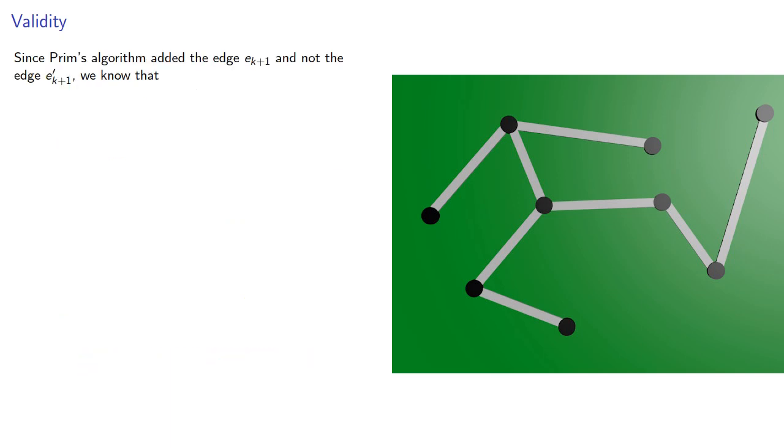Since Prim's algorithm actually did add the edge ek plus one and not the edge e prime, we note that the weight must be less than or equal to the weight of e prime. Since, if the weight of e prime was less, Prim's algorithm would have added it instead of what was actually added.